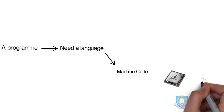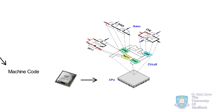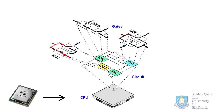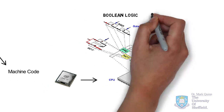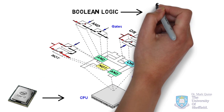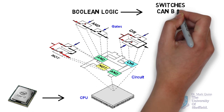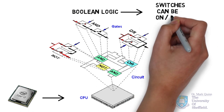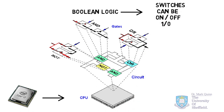A computer's central processing unit — its brain — is comprised of many many circuits, themselves comprised of logic gates: NOT, AND, OR are the typical logic gates. These gates are comprised of many many switches that can be in an on or off position, i.e. a one or a zero.